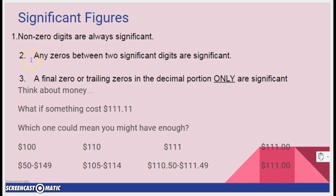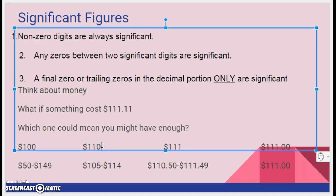Okay, any zeros between two significant digits are significant. So this one's at the end. This one is just to keep that decimal point there so it doesn't count. We didn't round to ones. We only rounded to tenths.